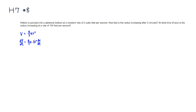We can cancel the 3 on top and the 3 on the bottom, and we get dV/dt = 4πR² dr/dt. What's given is that helium is pumped in at the rate of 2 cubic feet per second, so this tells us dV/dt. And how fast is the radius increasing? So we're looking for dr/dt.